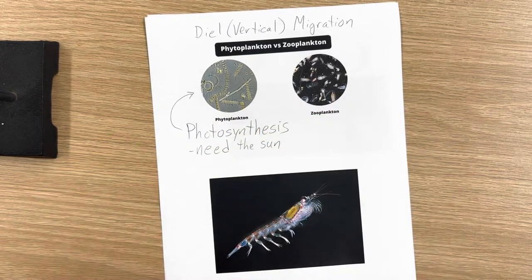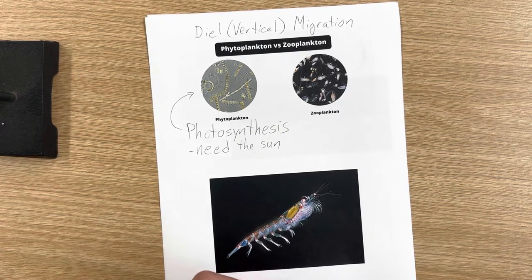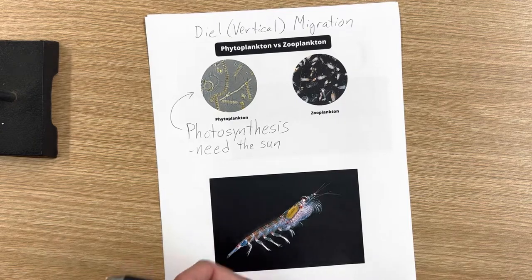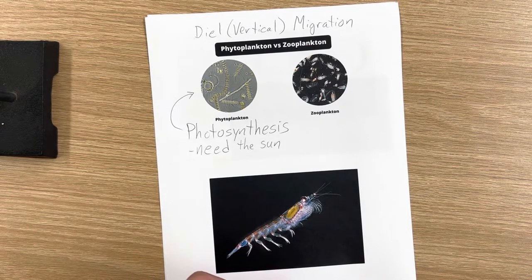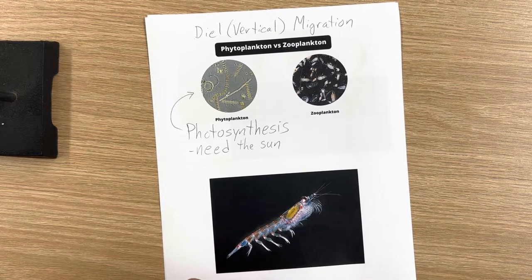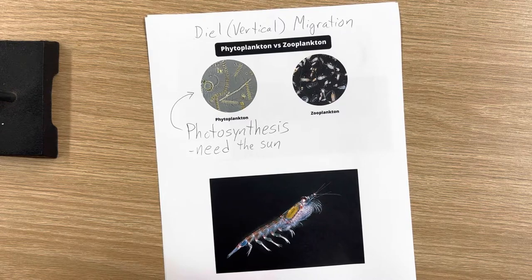So obviously you'll find phytoplankton fairly close to the surface where light is penetrating through the water. At the very surface waters, that's going to be the most light, but you can still go down 50 meters or 100 meters and still be getting some sunlight down there.